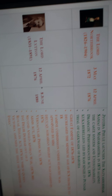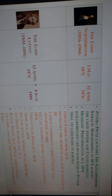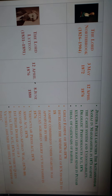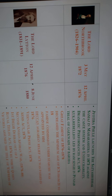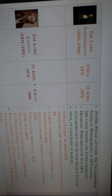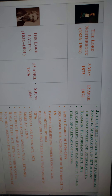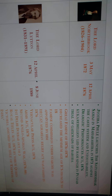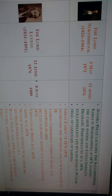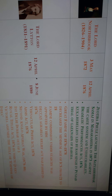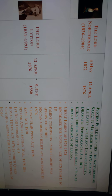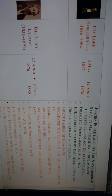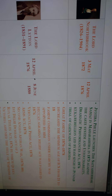The next Viceroy of India was Lord Northbrook, who served a full term from 3rd May 1872 to 12th April 1876. During his period, Jyotiba Phule launched the Satyashodak Samaj in Maharashtra in 1873, against the caste system and untouchability.